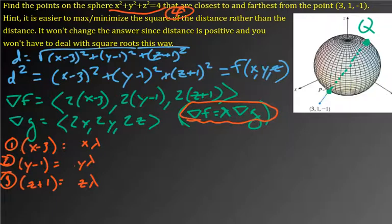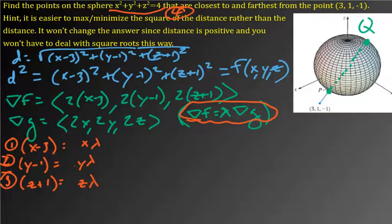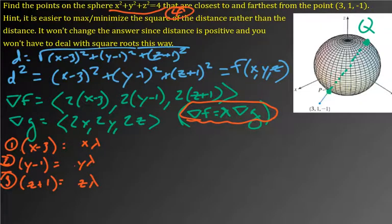Solving systems of equations is not always super easy and sometimes takes a little clever work. The way I personally think about this one is: you can actually get X, Y, and Z all in terms of lambda. That's a nice byproduct of having each equation involve only one of X, Y, or Z and lambda. Because of that, you can go back to the sphere equation at the very end and plug in X, Y, and Z in terms of lambda, and then solve for lambda.